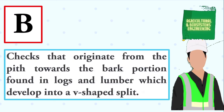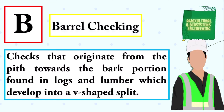Outdoor pen area adjoining the barn used for livestock. The answer is: barnyard. Checks that originate from the pith towards the bark portion found in logs and lumber, which develop into a V-shaped split. The answer is: barrel checking.